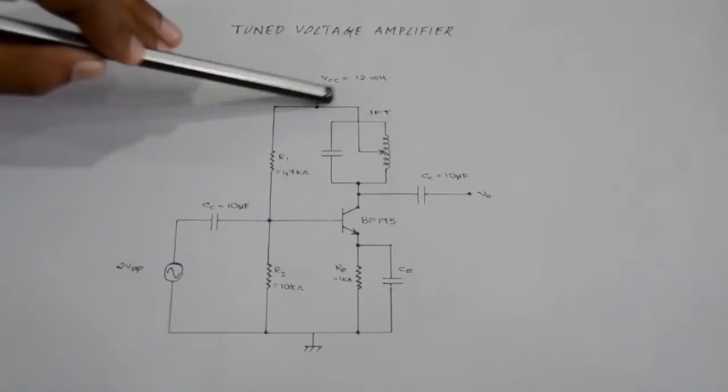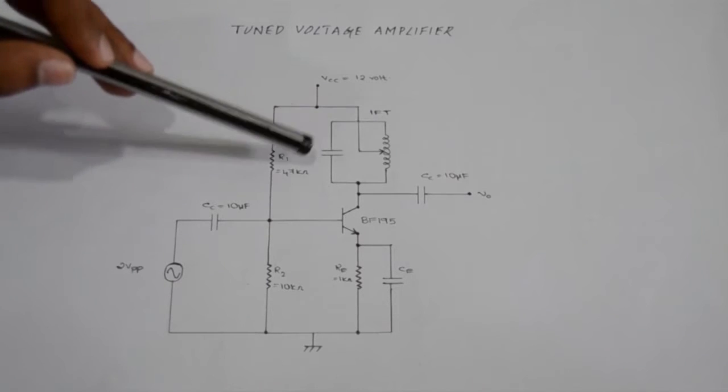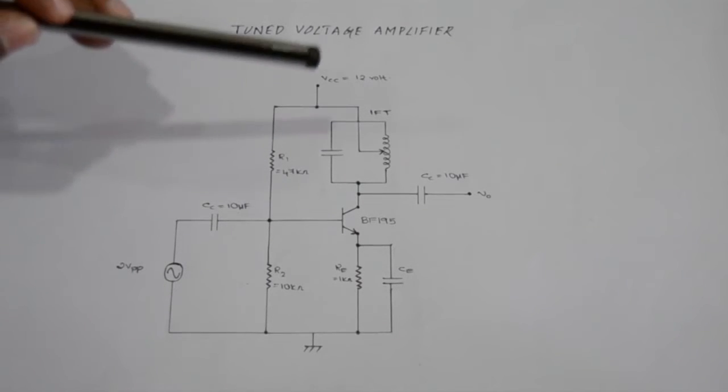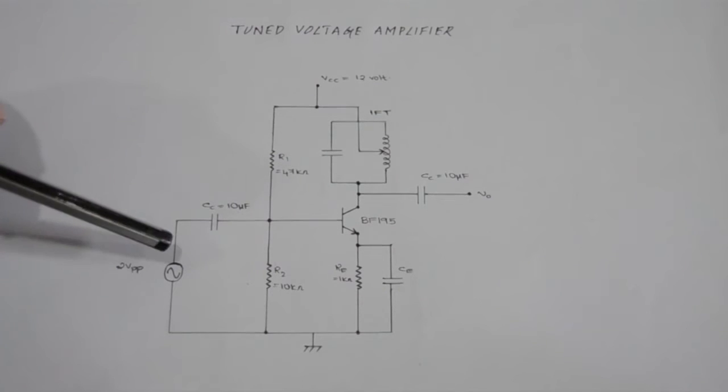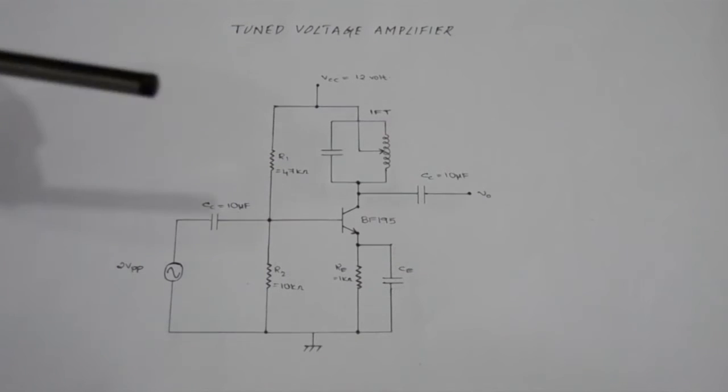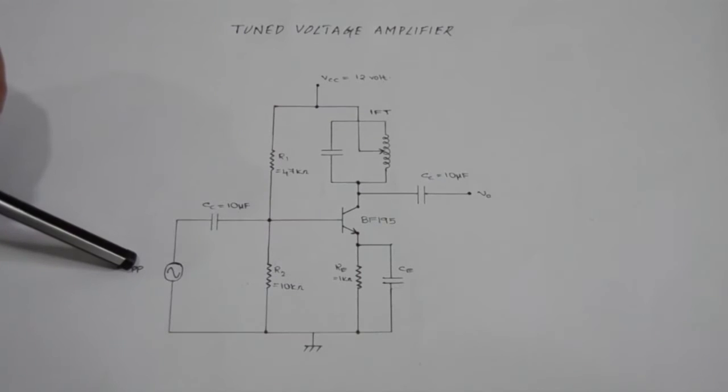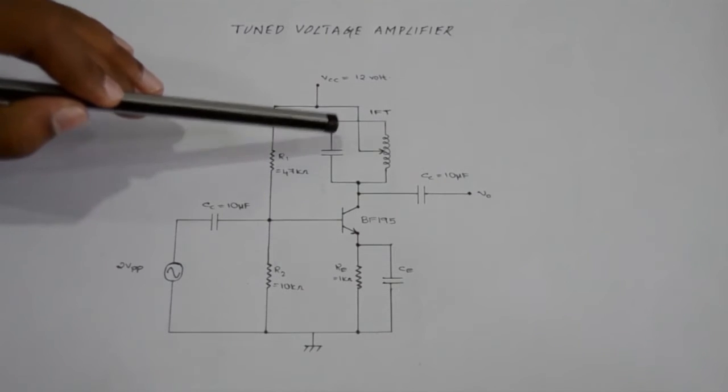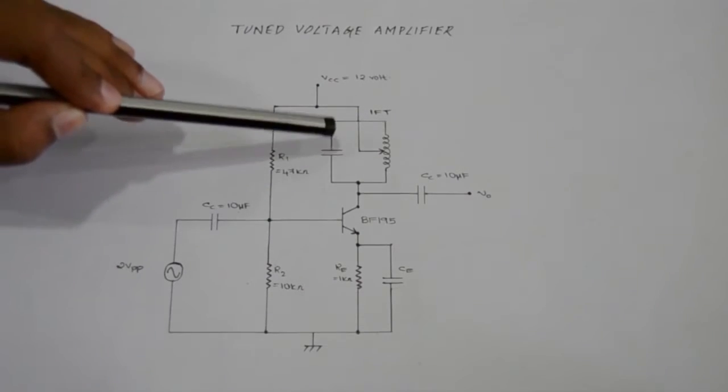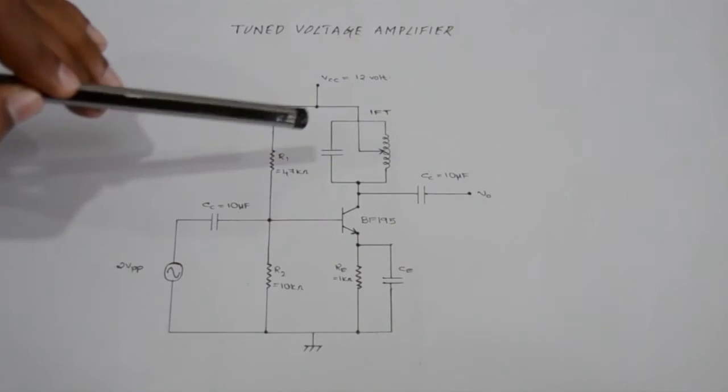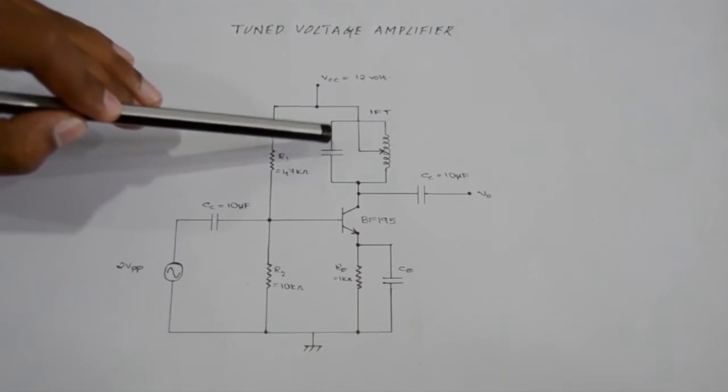Here the tank circuit is working as an intermediate frequency transformer which amplifies the maximum at an input frequency of 455 kHz. At all frequencies lesser and greater than 455 kHz, the gain of the amplifier will be lesser. The gain will be maximum at 455 kHz.